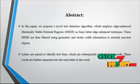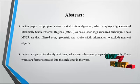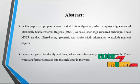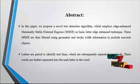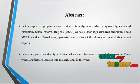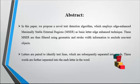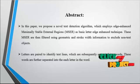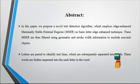Letters are paired to identify text lines, which are subsequently separated into words. We evaluate our system using a dataset of images. This experiment gives excellent results. Our method is executed on an image inpainting method. After detecting the text in the image, the detected text will be removed using the image inpainting method.